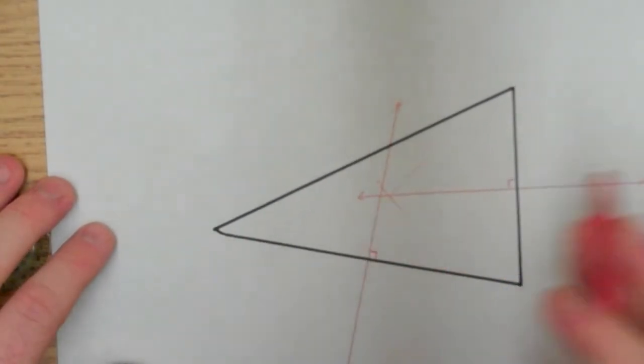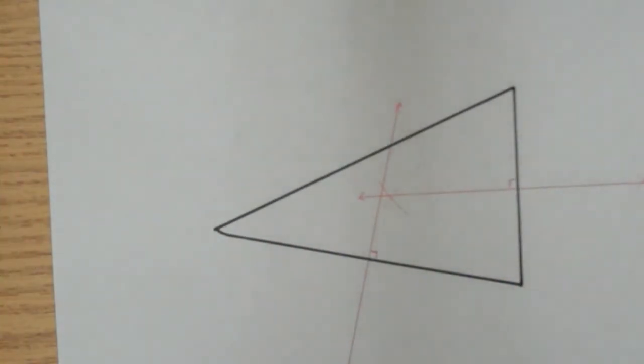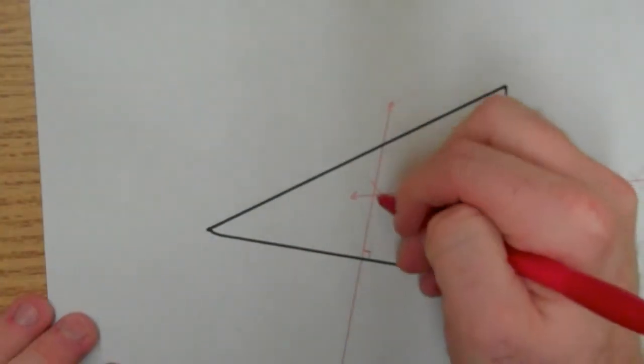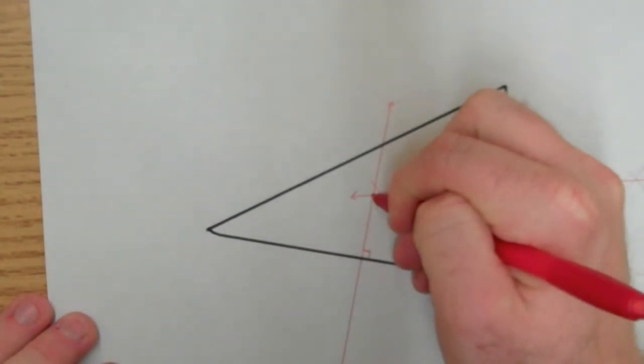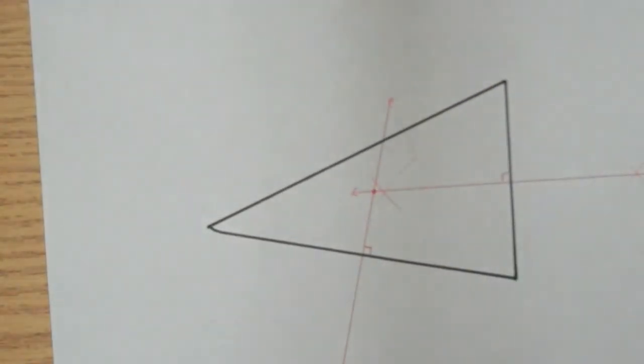Looks like I missed a little bit right here, but that's okay. We use crude instruments, so things aren't going to be perfect. But what we now know is that this should be my circumcenter.